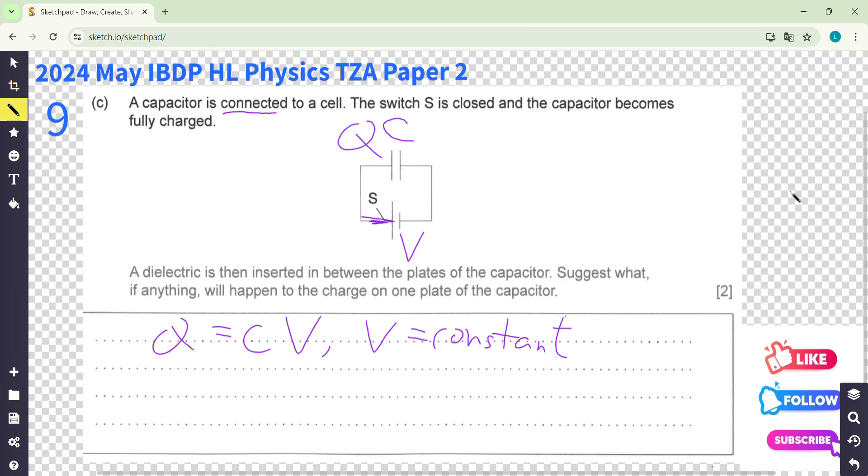See what happens. If we insert a dielectric, you know, the dielectric will make C increase. So the dielectric will increase the capacitance.